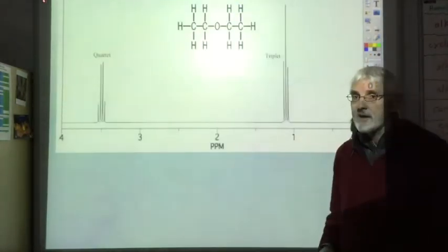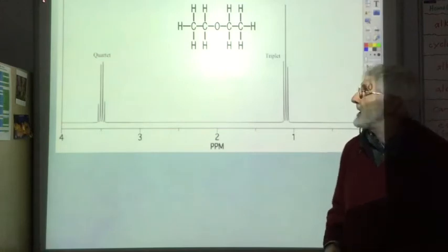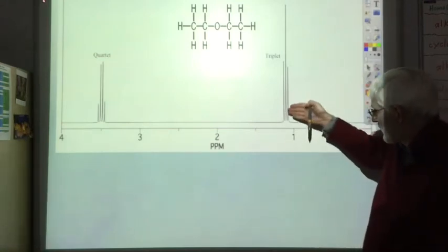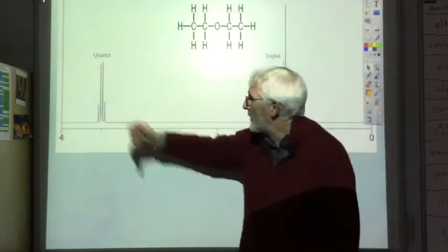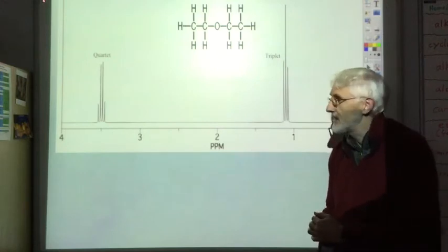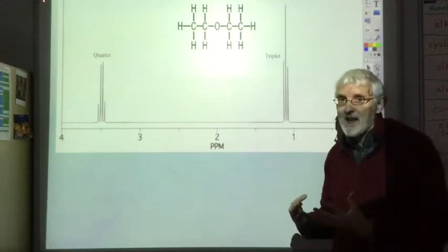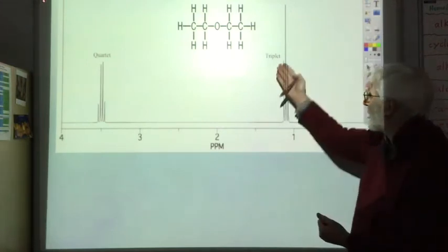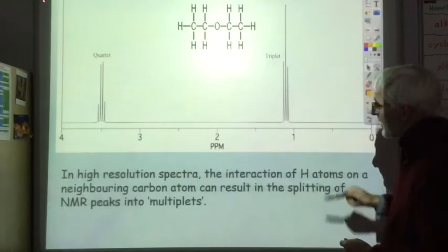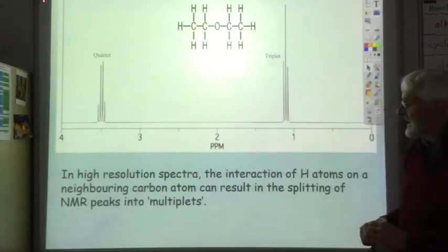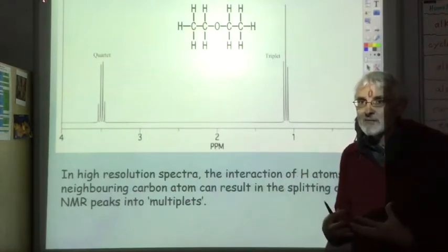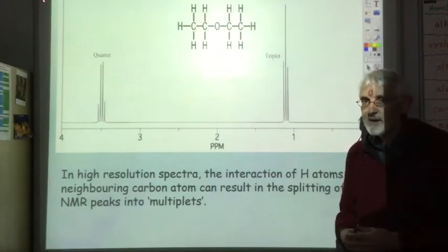Here's the high-resolution NMR spectra for ethoxyethane. We see two peaks — one at about one and one at about 3.5 — but as you can see they're split up into multiplets. So why does that happen and how do we know whether we end up with a triplet, quartet, or whatever? The basic rule is that it's the interaction of hydrogen atoms on the neighbouring carbon atoms which cause the splitting.